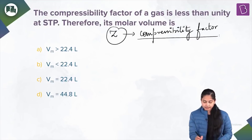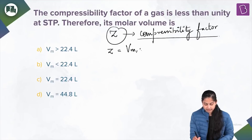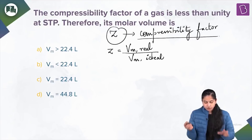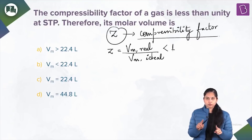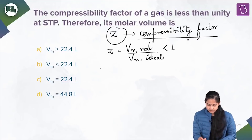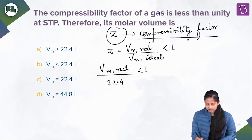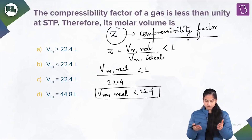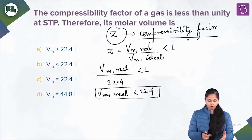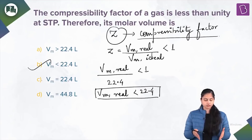The compressibility factor Z equals molar volume for real gas divided by molar volume for ideal gas. Since Z < 1 at STP, and the molar volume at STP is 22.4 liters, molar volume for real gas divided by 22.4 < 1, so molar volume for real gas is less than 22.4 liters. Option B is the right answer.